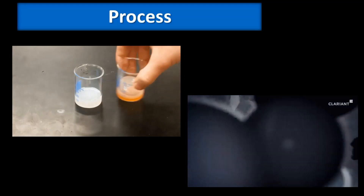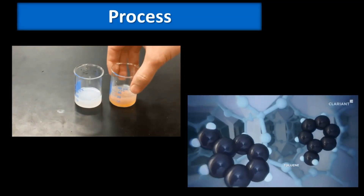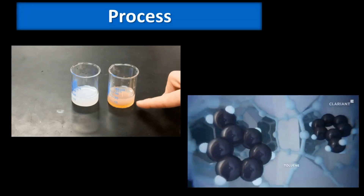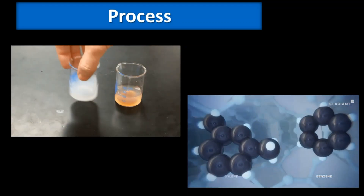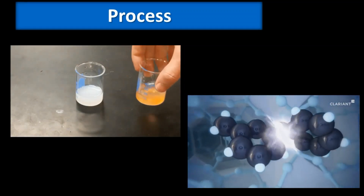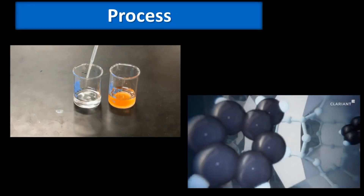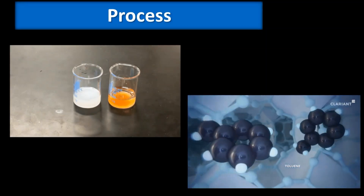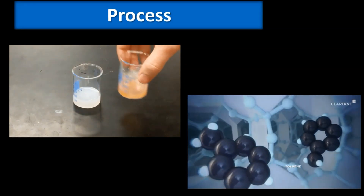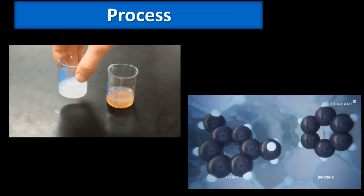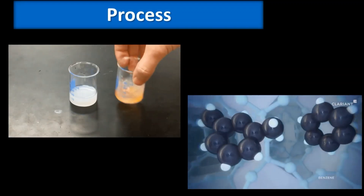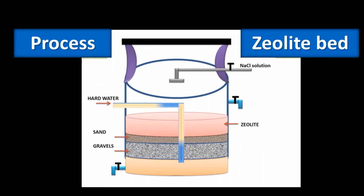Now we will discuss the experimental process. In two beakers we add water containing hardness impurities. The first beaker has no zeolite; the second beaker contains zeolite, which exchanges cations and makes the water soft. You can observe that the water slowly becomes transparent from turbid, meaning the zeolite has taken up the cations of the impurities. A molecular animation also shows how molecules pass through the porous cage structures of zeolite.